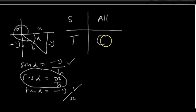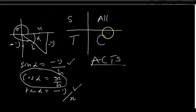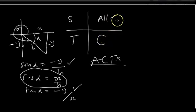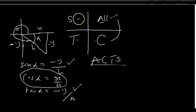In conclusion: all are positive in the first quadrant, sin is positive in the second, tan is positive in the third, and cos is positive in the fourth. That brings us to an acronym to help us easily remember — ACTS. Going clockwise: All, Cos, Tan, Sin. Every time you remember ACTS, you can easily remember the trigonometric quadrants and their reference angles.